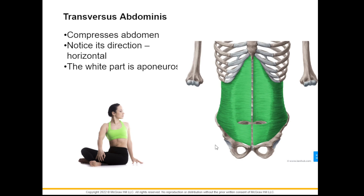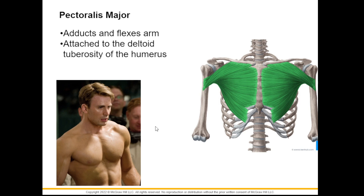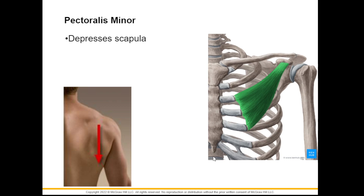Underneath the internal abdominal oblique you would find your transversus abdominis, which is a horizontal muscle — hence the name transverse. Up on the chest we have the pectoralis major — once it contracts it will pull the upper arm closer to the body, which we call adduction. It is attached to the deltoid tuberosity of the humerus. We also have a pectoralis minor underneath the major; its job is to depress the scapula, bringing your shoulders down.